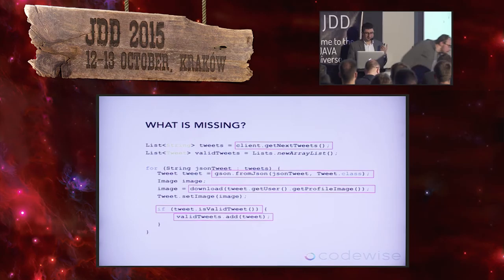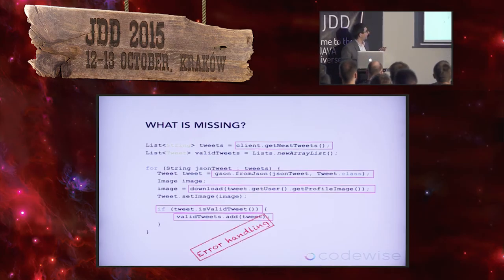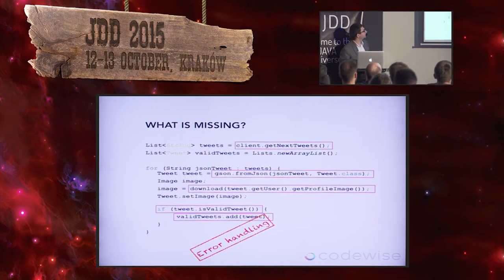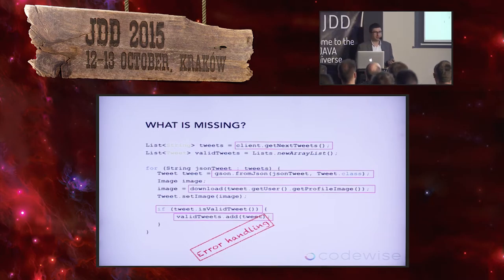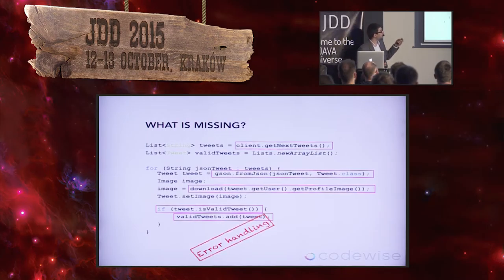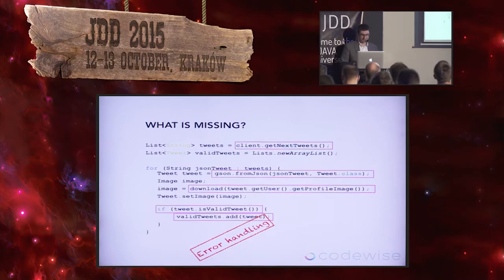What is missing in this simple example? We have no error handling. If we add error handling it will add a lot of code, especially in Java — try-catches for this, probably for this, for downloading here. It will be a lot of code, and we have to make sure that if there's an error in one place it does not impact the processing of the whole stream.